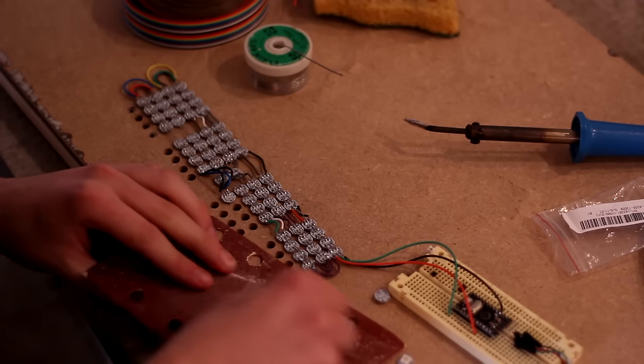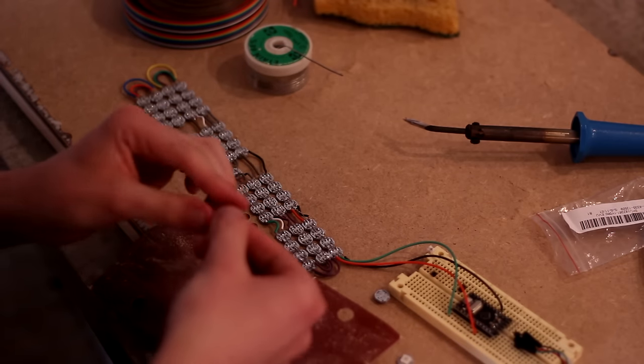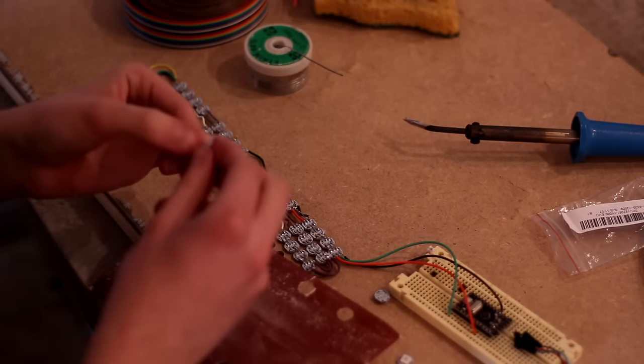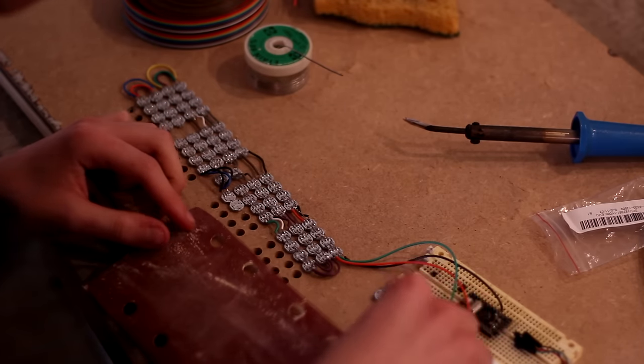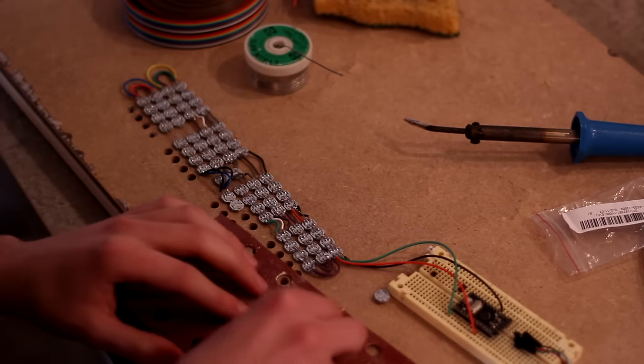Sometimes, when some pieces were too big, I had to use sanding paper, grain 120, to remove the excess plastic around the LED so that they could fit perfectly without touching their neighbor.